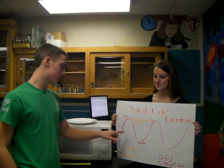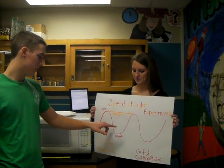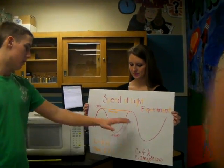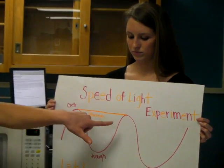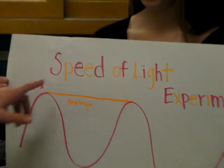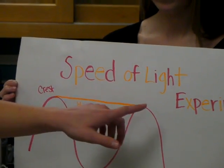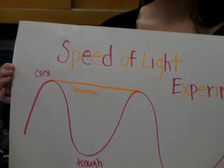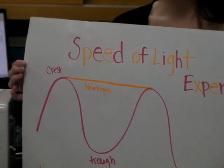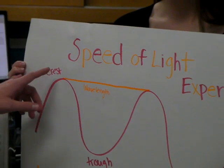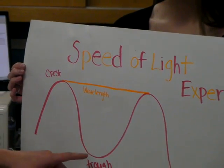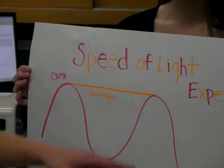This is a wavelength, or a bunch of waves. One wavelength is from crest to crest, and the microwave cooks at the crests and troughs throughout the wave.